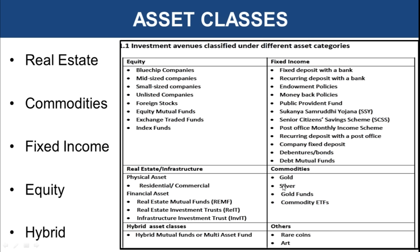Then there are commodities — gold, silver, gold funds, commodity ETFs, metals, and agricultural commodities like spices. These are generally traded on multi-commodity exchange. Then there are fixed income asset classes, which are the most secure — fixed deposits, recurring deposits, endowment plans, money back plans, public provident fund, debentures, bonds, and debt mutual funds. They provide a fixed income and guaranteed return with lower risk. You know in advance what return you will get, and once your time period completes the policy matures or the deposit can be redeemed.